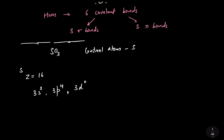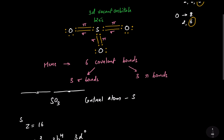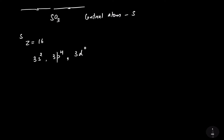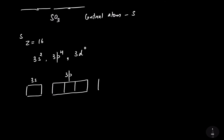Sulfur is having 3d subshell for the expansion of octet, that is to have 12 electrons. Sulfur is having 12 electrons after the formation of 6 covalent bonds — that is why, because sulfur is having 3d vacant orbitals. Now let's understand the concept of hybridization in case of SO3. Let's make the orbital diagram of sulfur in the form of boxes: that's the 3s, in 3p we are having 3 degenerate orbitals, and 3d subshell is having 5 degenerate orbitals.